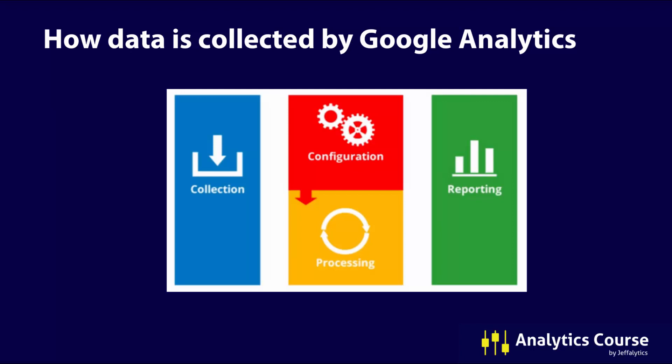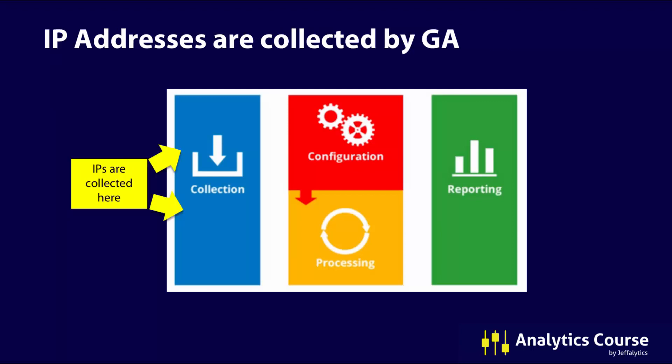Most of us think of Google Analytics purely in the form of the reports — we go in, look at a report, see our data. That data has been scrubbed, cleaned, processed, and fixed by Google and by our own organizations with filters. But basically this is the view of how Google Analytics works, and within that view, IP addresses are collected by Google Analytics at the collection point.